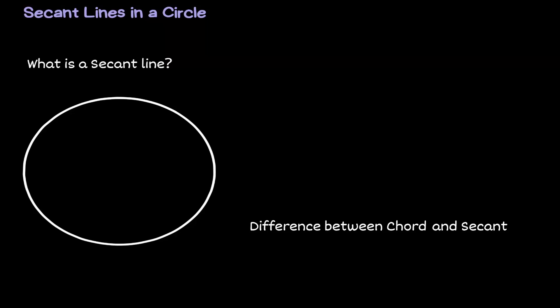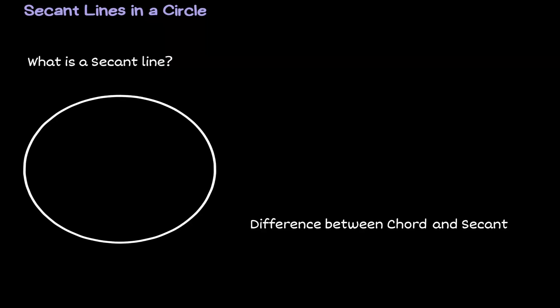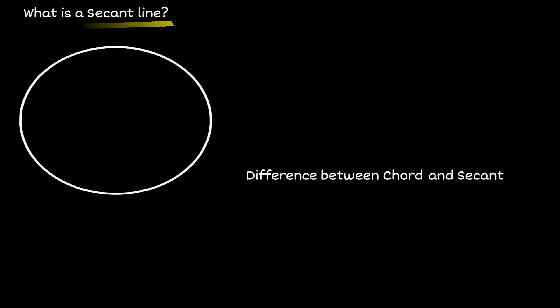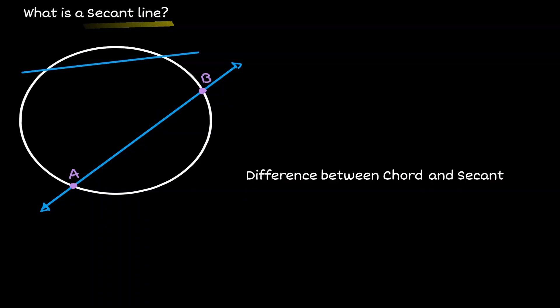Welcome. Let's discuss secant lines in a circle. A secant line is a line that intersects the circle at two different locations. Let's call those intersections A and B. Here's another example of a secant line — notice that it intersects the circle at two different locations.